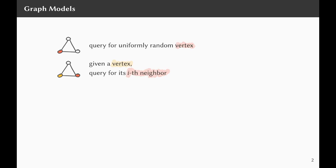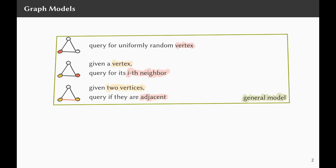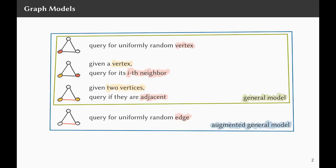So it may specify vertex 20 and ask for the seventh neighbor. For dense graphs, we might want to allow adjacency matrix queries — that is, the algorithm specifies two vertices and asks whether they are adjacent. If we allow all three of these queries, we call this the general model. There is a fourth query we might allow: the algorithm queries for a uniformly random edge. If we allow all four types of queries, we call this the augmented general model. These are the two models I'll be talking about in this talk.